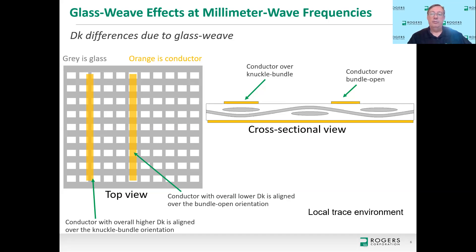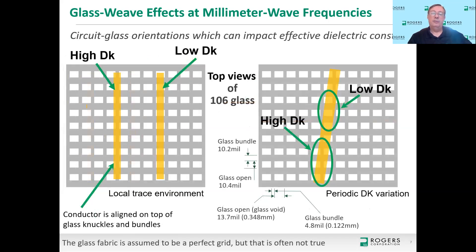There are two most common ways the glass weave pattern can interact with a circuit. On the left is the local trace environment — already discussed — where a conductor aligned to the knuckle-bundle area perceives a higher overall dielectric constant versus a conductor over the bundle-open area with lower Dk. On the right is the periodic Dk variation. Based on many studies, I think this periodic Dk variation is the real issue, though the local trace environment is also a concern.